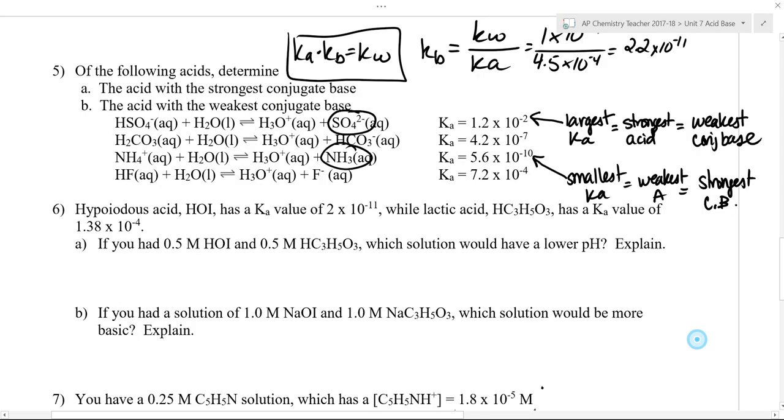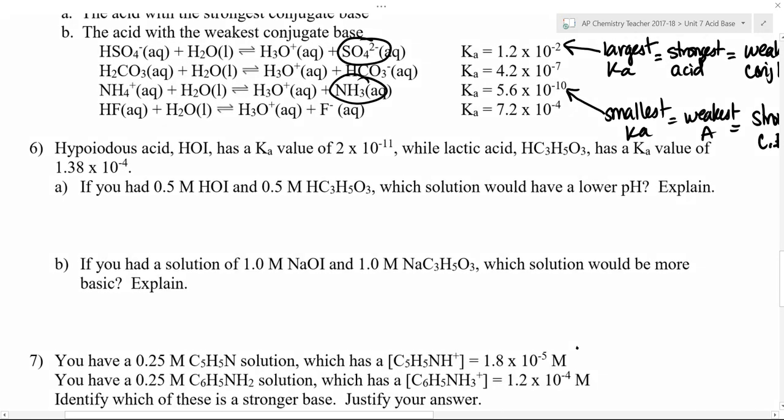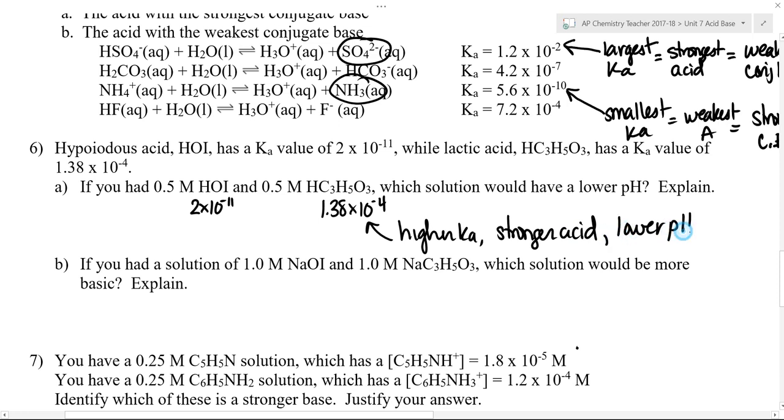And here's another example in problem number six. You're given Ka values for two acids. So HOI is 2 times 10 to negative 11. That seems pretty weak. Lactic acid is 1.38 times 10 to negative 4th. So it looks like lactic acid has the higher Ka value. So it is going to be the stronger acid. And since we're comparing solutions of the same concentration, that means this one is going to have a lower pH because it will have generated more H plus ions. It is important to note that the pH depends on both molarity and K value. So we can make this comparison here because these solutions have the same molarity.